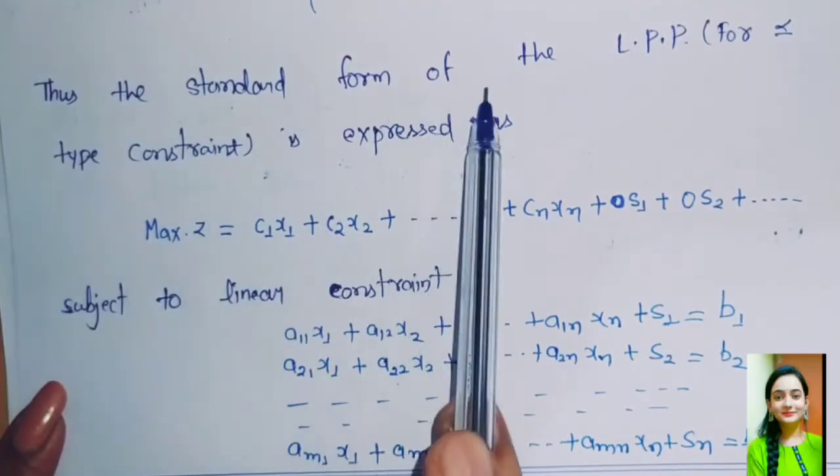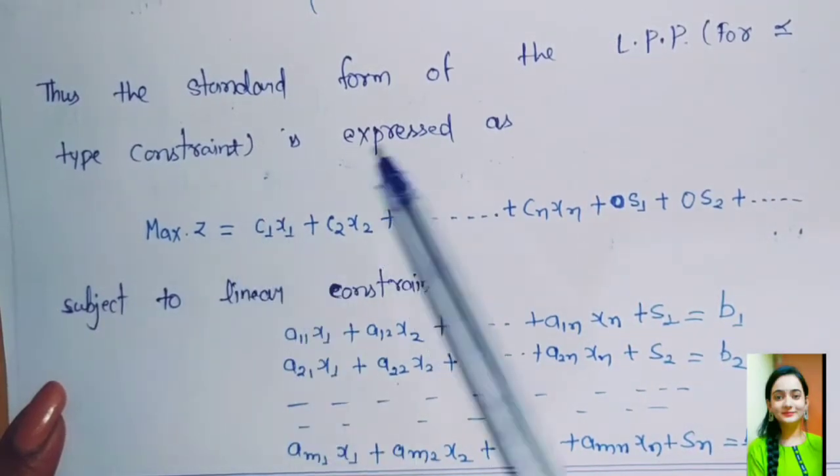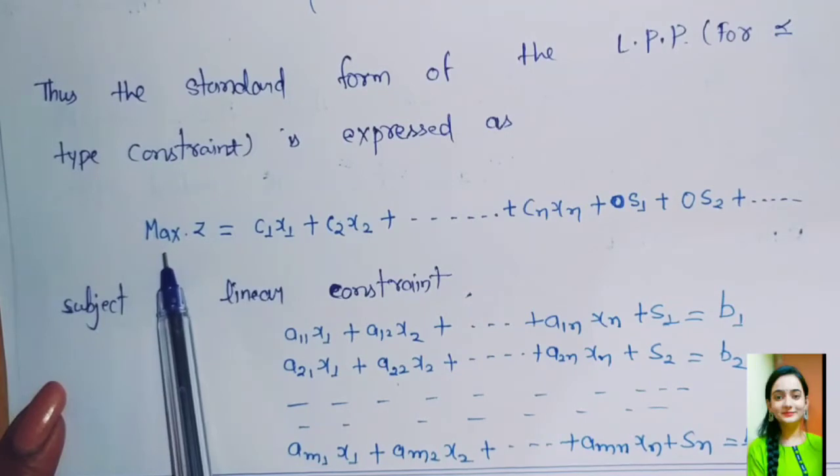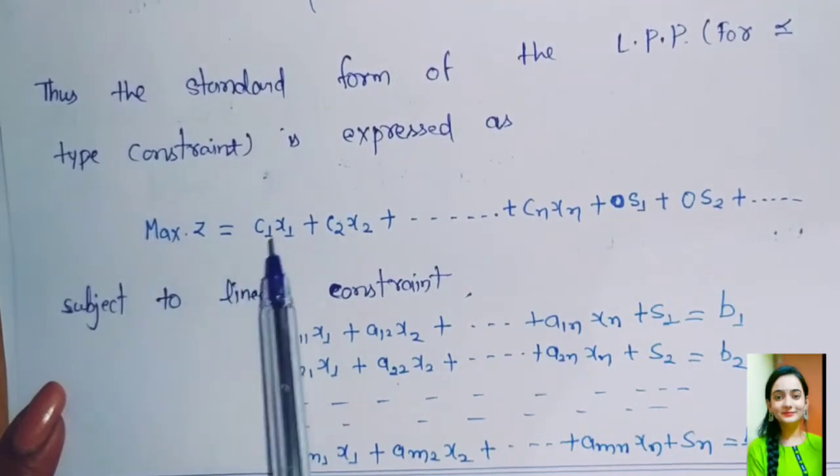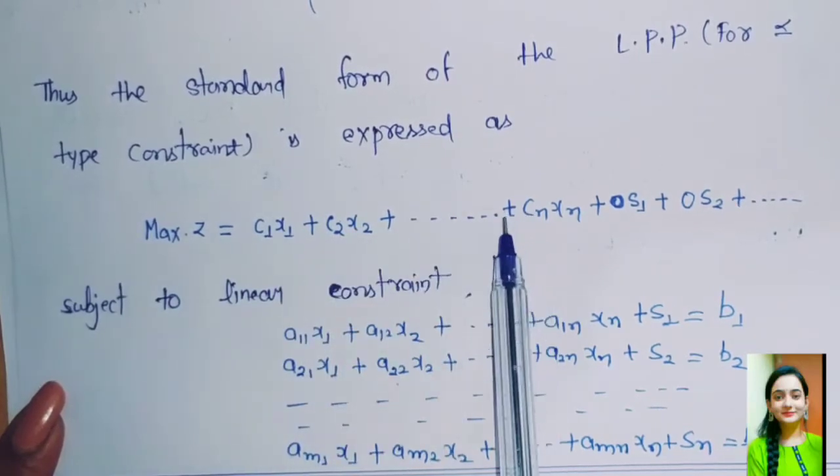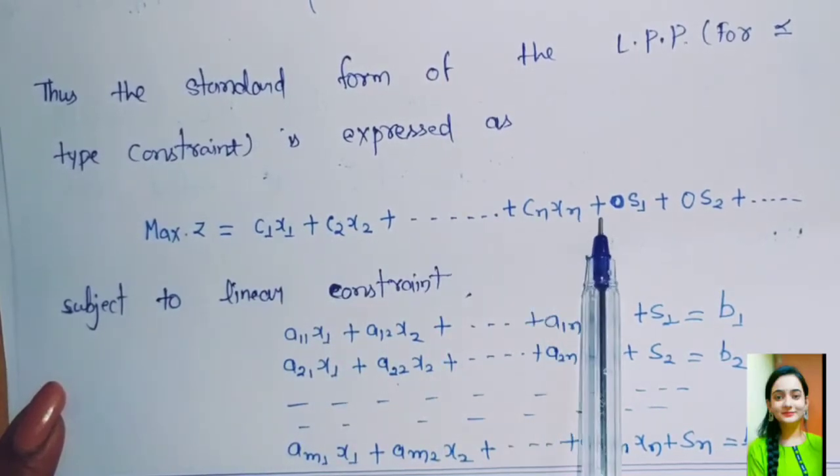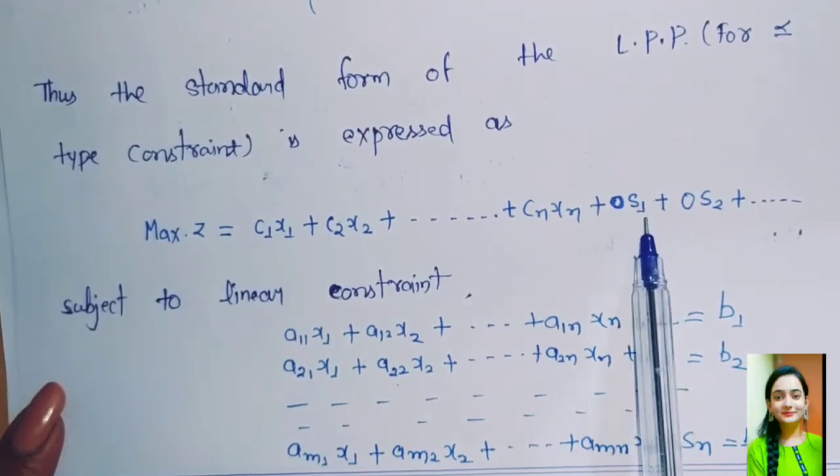Thus, the standard form of the LPP for less than or equal to type of constraints is expressed as: maximize z = c1x1 + c2x2 + ... + cnxn, and also with zero cost we add slack variables: 0·s1 + 0·s2 + and so on.